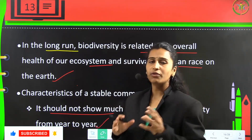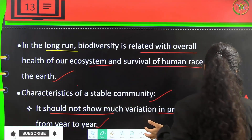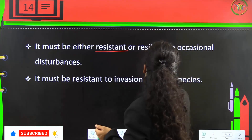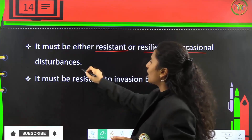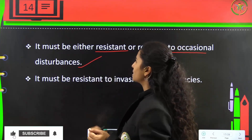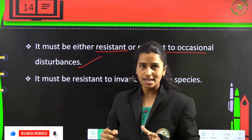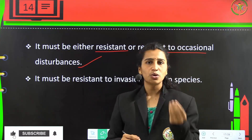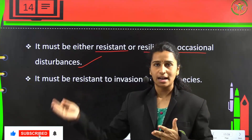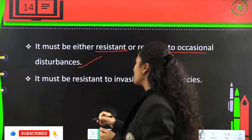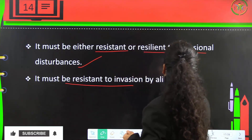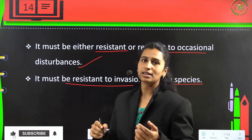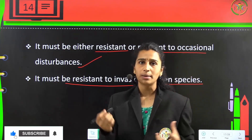A stable community must be either resistant or resilient to occasional disturbances — it should show only slight changes, not a drastic change. It must also be resistant to the invasion by alien species, which are foreign species that attempt to invade the ecosystem.